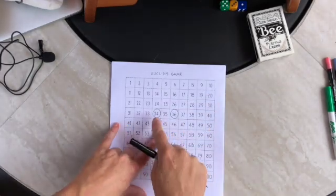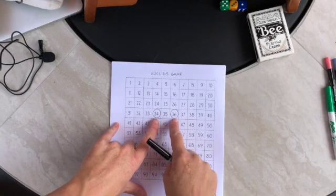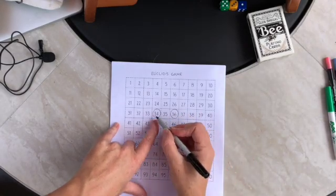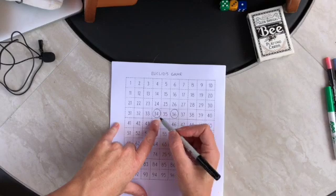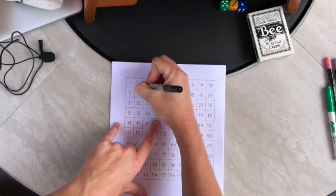The first thing you do is just look at any two circled numbers and subtract. So we have a 36 and a 34. If you subtract 36 minus 34, we get 2, we circle that number.